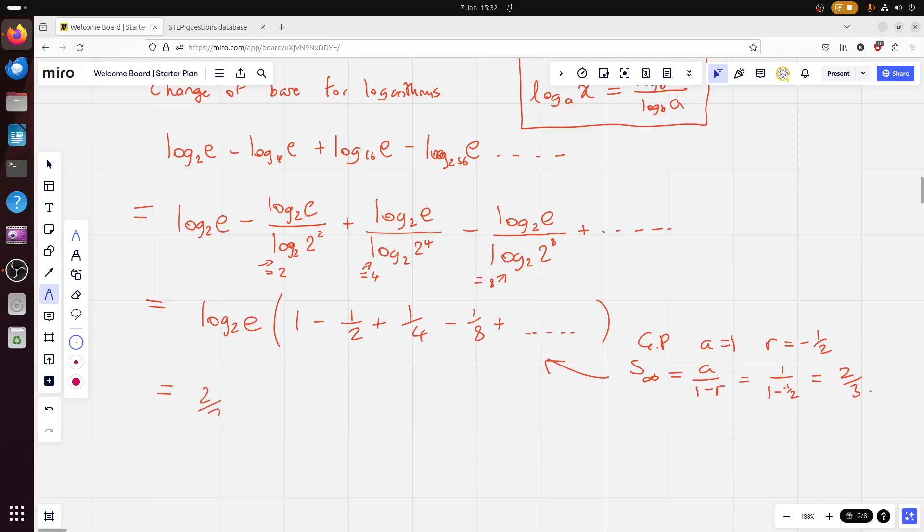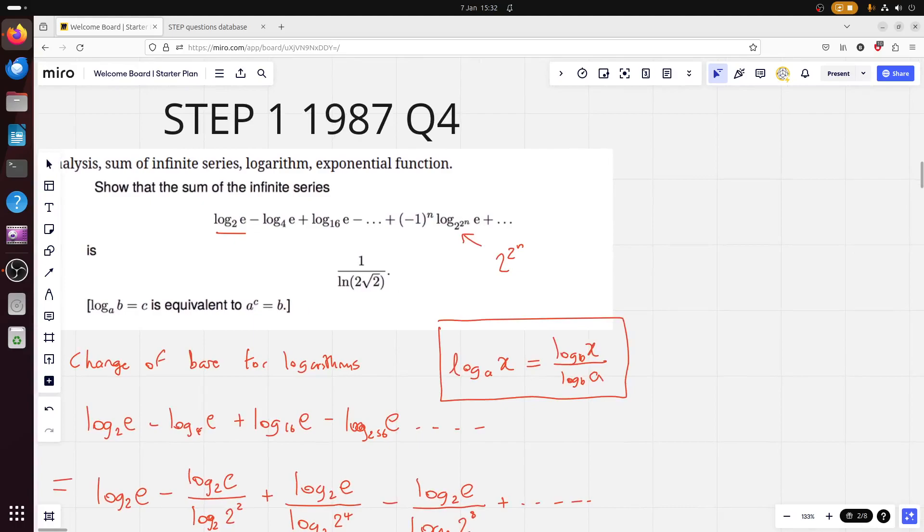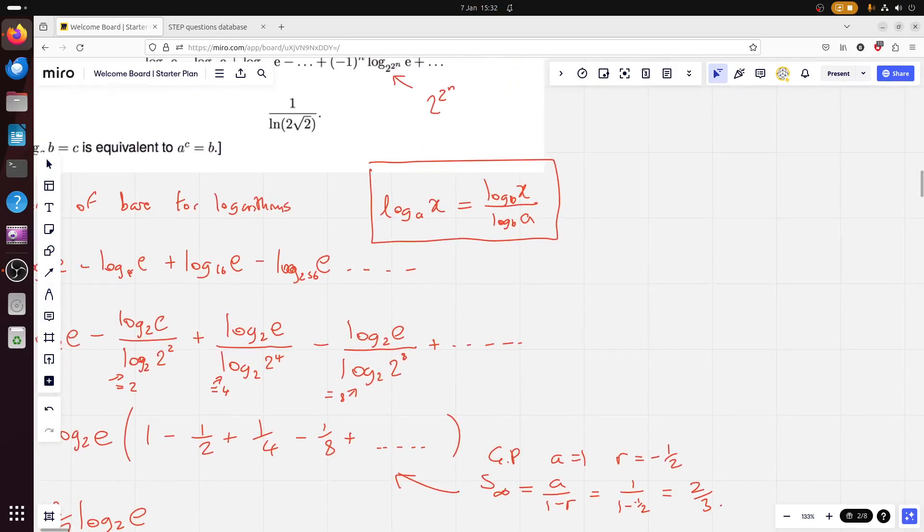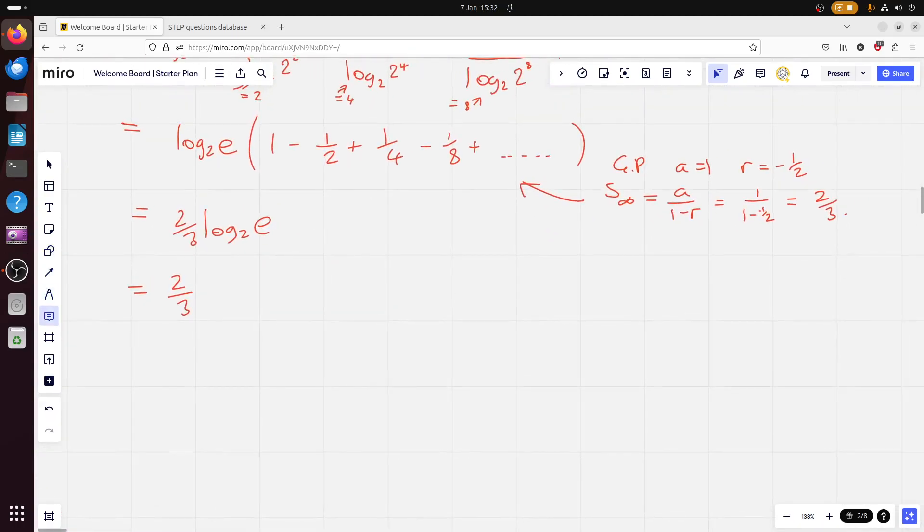So we get 2 thirds log base 2 of E. I looked at that, and I looked at their answer, and I thought mine doesn't look like theirs yet. But all you've got to do really is use the change of base formula for logarithms again. This is going to be log base E of E on the top, but then log base E of 2 on the bottom. Both of those are Luns. Log base E of E is just 1, so you end up with 2 over 3, Lund 2.